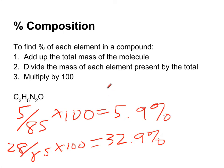And the last one, oxygen. It was 16 grams, because there's only one oxygen. Divide by 85 times 100. We should end up with 18.8% oxygen.